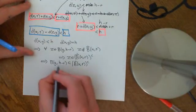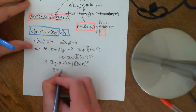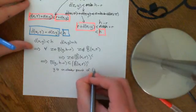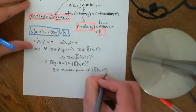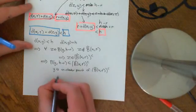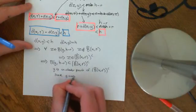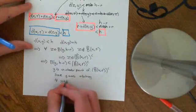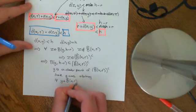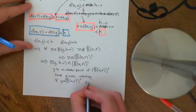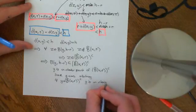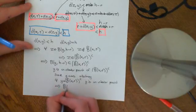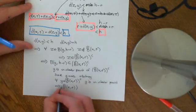Which is what we needed to show, because it now shows that y is an interior point of the complement of the closed ball. And since y was arbitrary, it shows that for all y in the complement of the closed ball, y is an interior point, which shows that this complement set is open — which implies that the closed ball centred at x of radius r has an open complement.